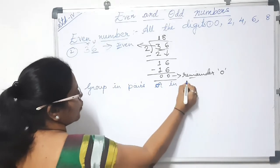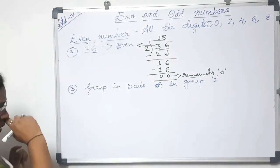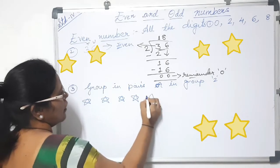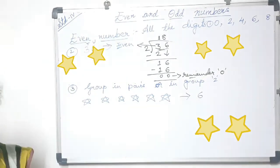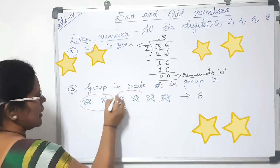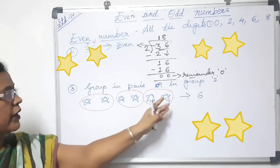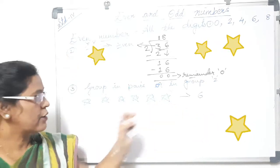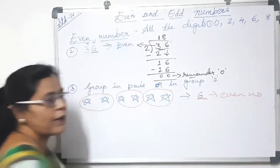For example, let me draw 6 stars. Now if I group them into 2's — this is 1 pair, this is 1 pair, this is 1 pair — so here we have 3 groups. There is no leftover star, so the remainder is zero, and therefore 6 is an even number.